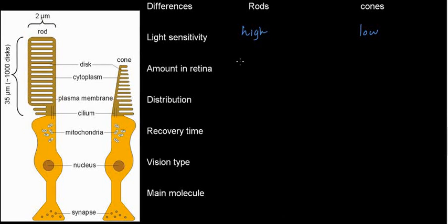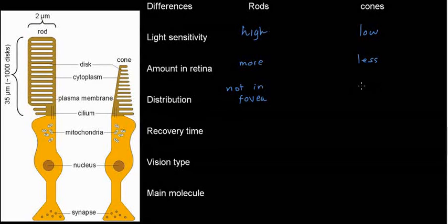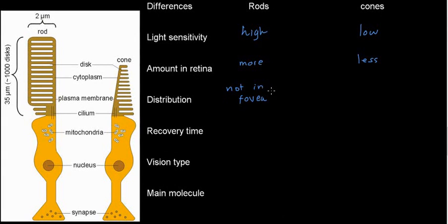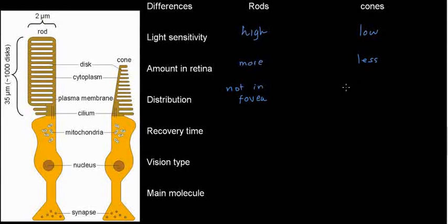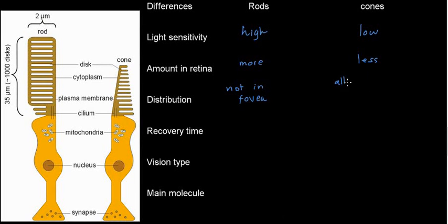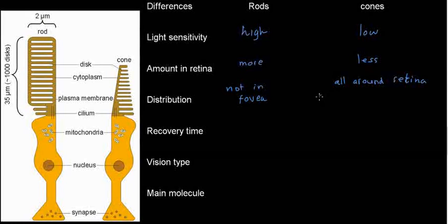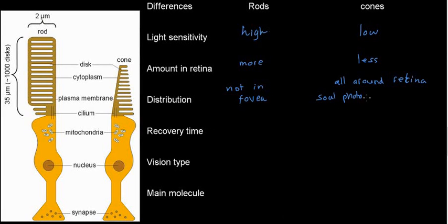Amount in the retina: we have more rods than cones in the retina, and that's important to know. Distribution: rods are distributed across the retina but they are not present in the fovea. Cones are distributed all around the retina, but they are the sole photoreceptors in the fovea.